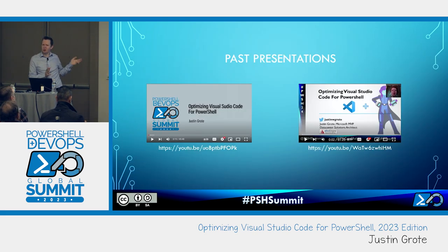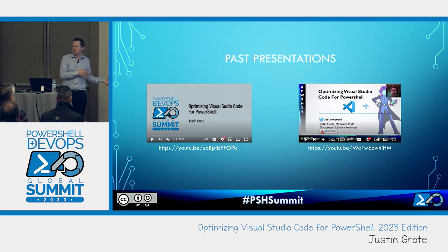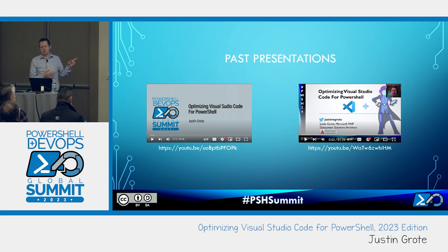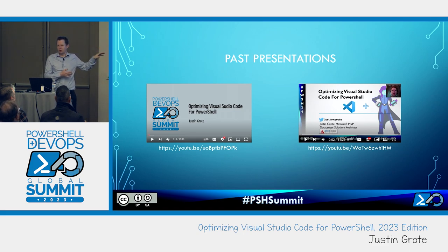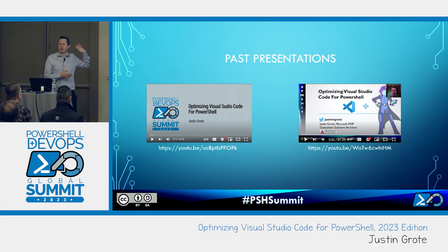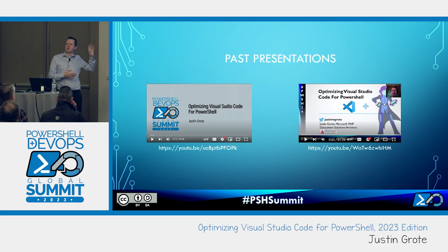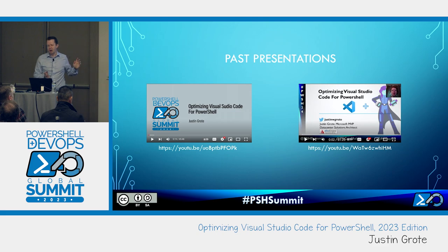This is kind of becoming a pseudo series. I did this last year, and also at PS Conf EU, and I think there's a third one I did for PWSH 24. If you just Google 'optimizing Visual Studio Code for PowerShell' and my name, it'll probably come up. Loads of extra tips - if you want to learn about neat little settings tweaks, settings files, and all kinds of cool extensions, those are great presentations to go back and check out.